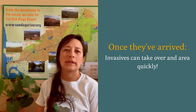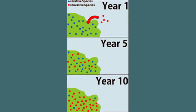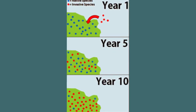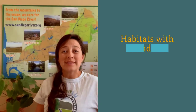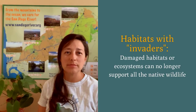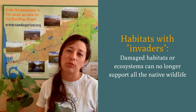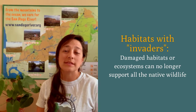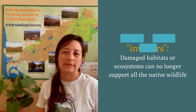Let's see how invasive species can quickly take over an area. Here we can see how an invasive species can take over in a period of one year, in a period of five years, and after 10 years. Once the species has taken over an ecosystem, sometimes the ecosystem can no longer support all the native wildlife it once did, because they don't provide food and shelter that wildlife depend on.